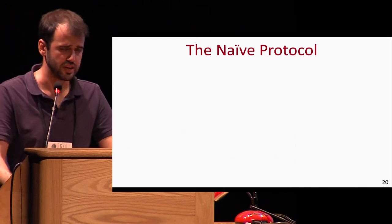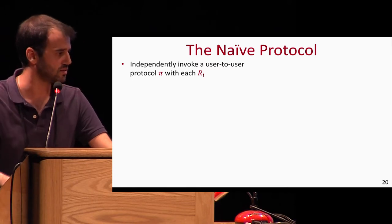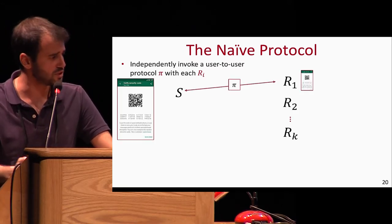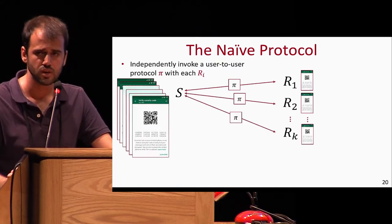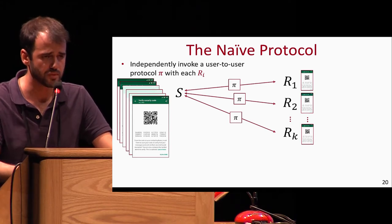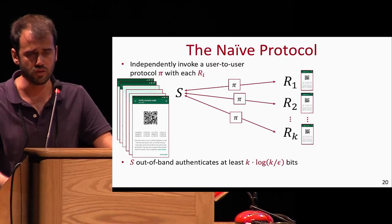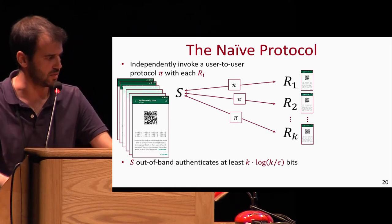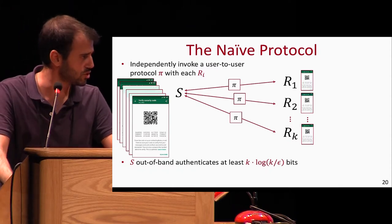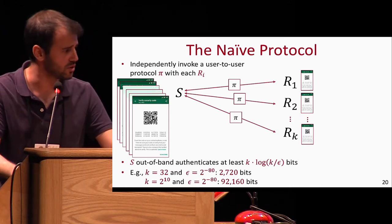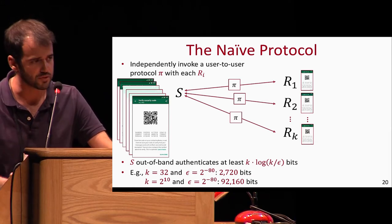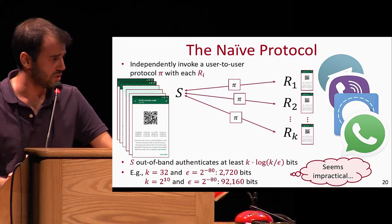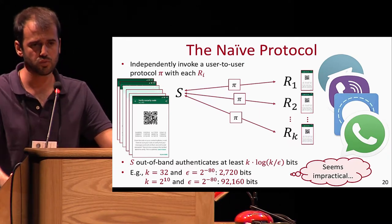The most naive protocol is to have S independently invoke the user-to-user protocol with each receiver. S invokes a user-to-user protocol PI with R1, then R2, and so forth until RK. The problem is that S must now authenticate quite a long value — at least K·log(K/epsilon) bits, where the factor of K inside enables a union bound over receivers. For a group of roughly a thousand users, S must authenticate more than 90,000 bits to achieve 80 bits of security. This is what today's messaging platforms enable.